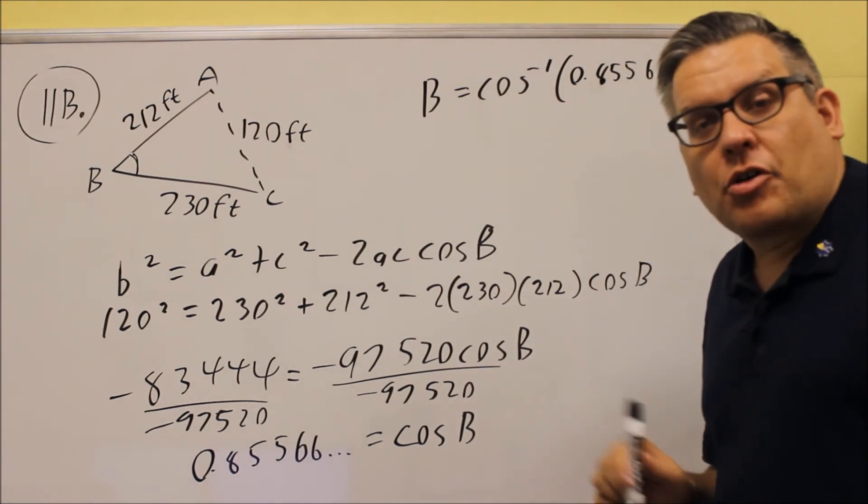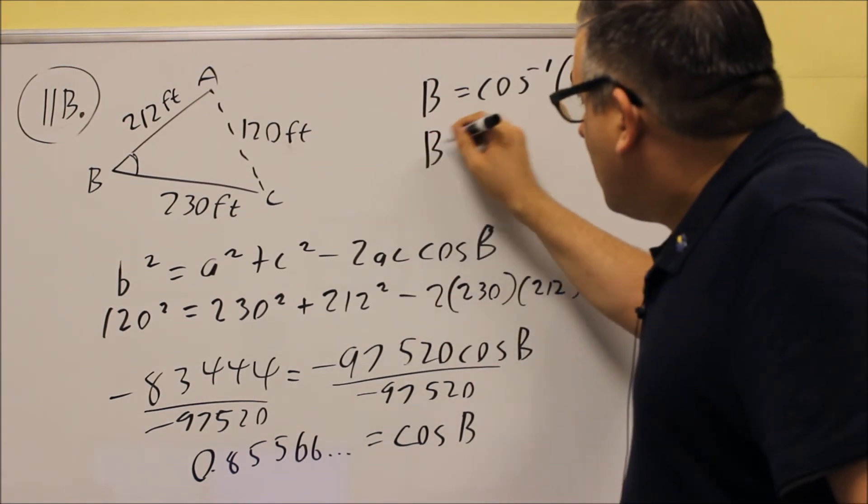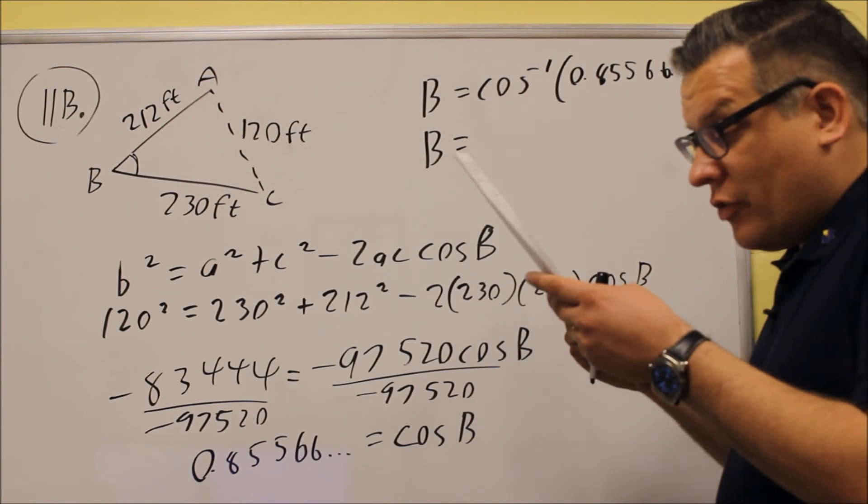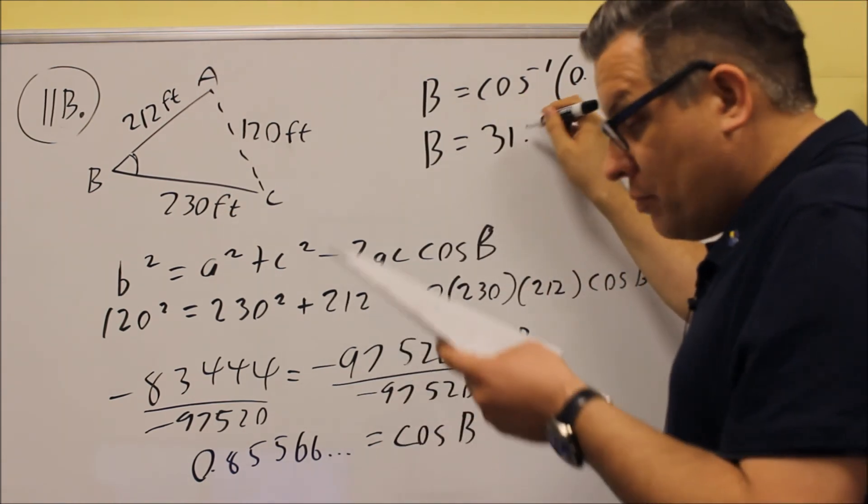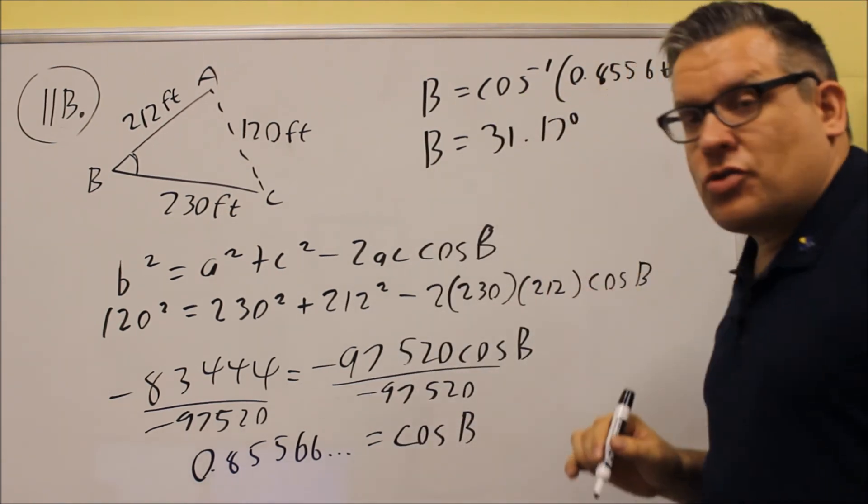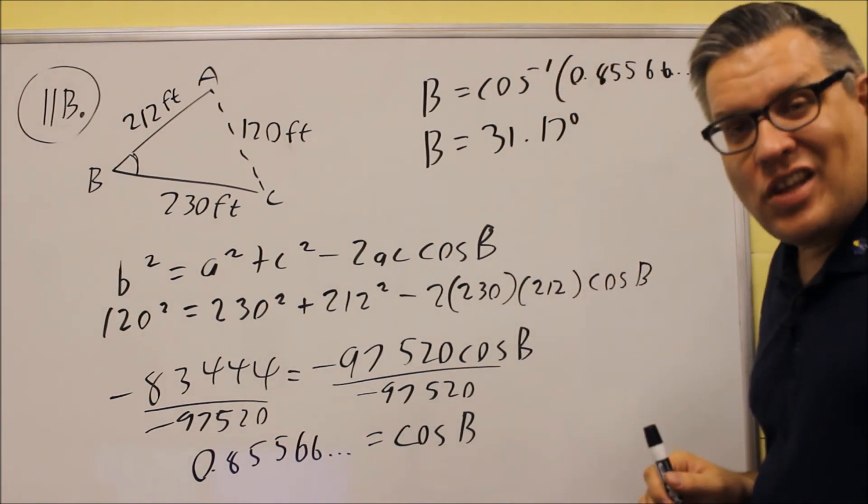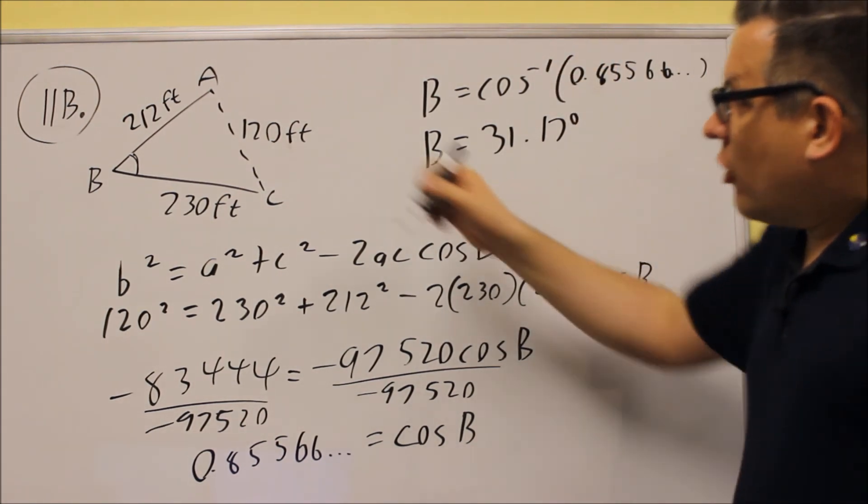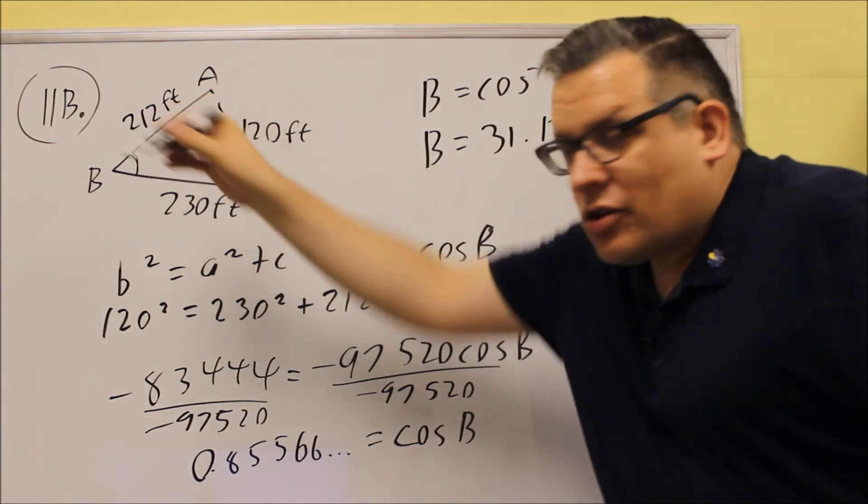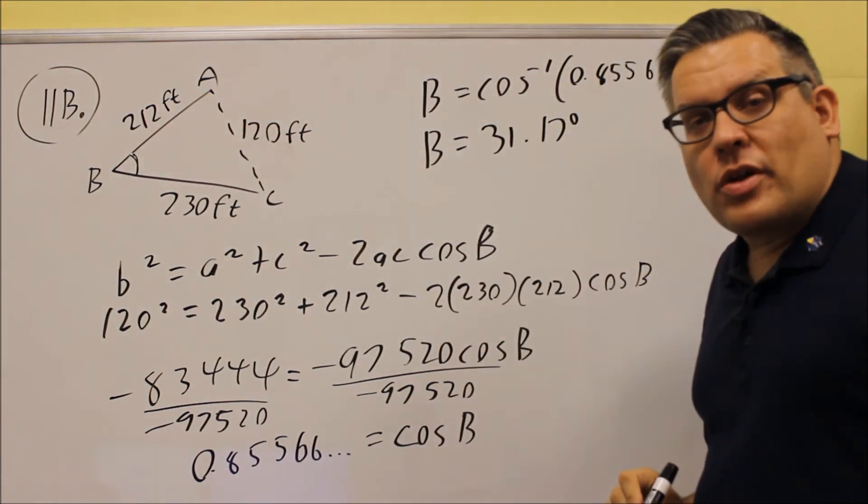So, if I put that into the calculator, inverse cosines of that, we're going to get 31.17 degrees. So, don't forget to do the inverse cosines at the end. And so, that would be the angle that separates the two cables there, where it's connected to the barge, should be 31.17.